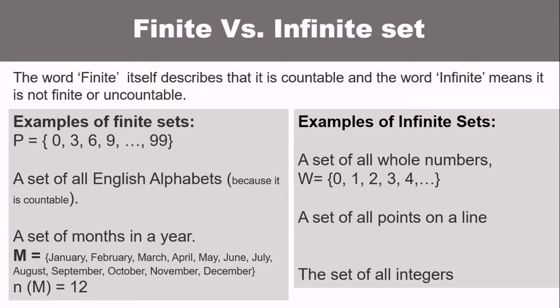For infinite set, a set of whole numbers. We don't know where it ends because it has ellipses. There are many whole numbers. Next, a set of all points on a line. We all know that a line consists of many points. Next is the set of all integers. There are many integers, so it's an infinite set. But if it said the set of all integers from 1 to 10, that is finite set because you know the integers from 1 to 10.